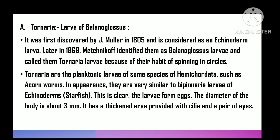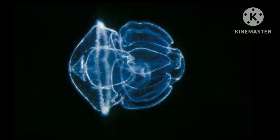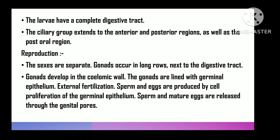The tornaria larva is a planktonic larva of some species of hemicordata such as acorn worms. It is very similar in appearance to the bipinnaria larva of starfishes in echinoderm. It is an oval-shaped transparent larva. The diameter of the body is about 3 mm. It has an apical plate, which is a thickened region provided with a tuft of cilia and a pair of eye spots. The larva has a complete alimentary canal. The ciliary band stretches throughout the anterior, posterior, and post-oral regions.